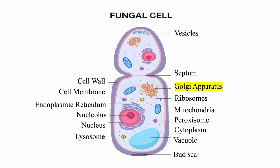The Golgi apparatus consists of flattened membrane sacs that modify, sort, and package proteins and lipids for storage or transport out of the cell. Vesicles transport materials within the cell and can also move substances into or out of the cell via processes known as endocytosis or exocytosis. Vesicles can also carry proteins from the Golgi apparatus to their destination, store substances, or contain enzymes for metabolic processes. Peroxisomes are small bubble-like structures that help break down fats and get rid of harmful substances, working like tiny recycling centers — converting fats into energy and making sure any toxins are made safe for the cell.